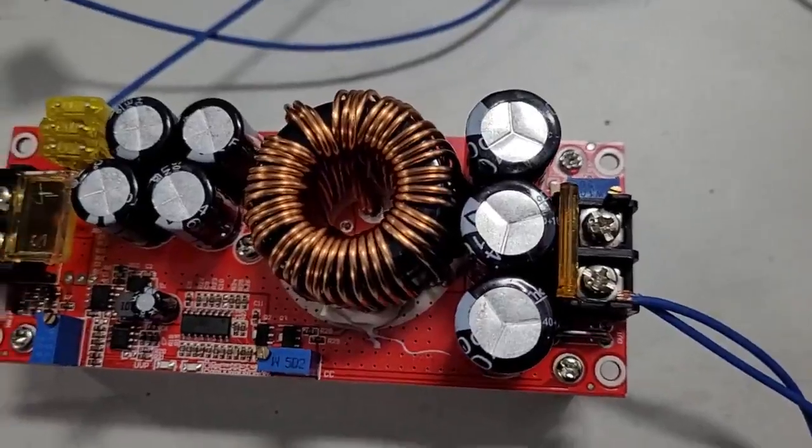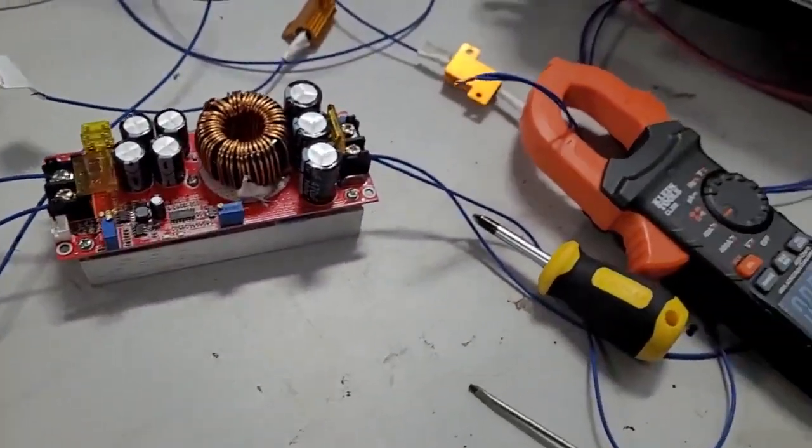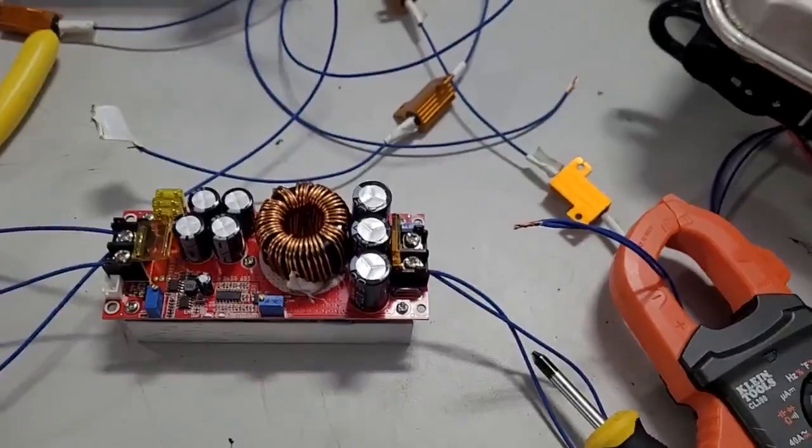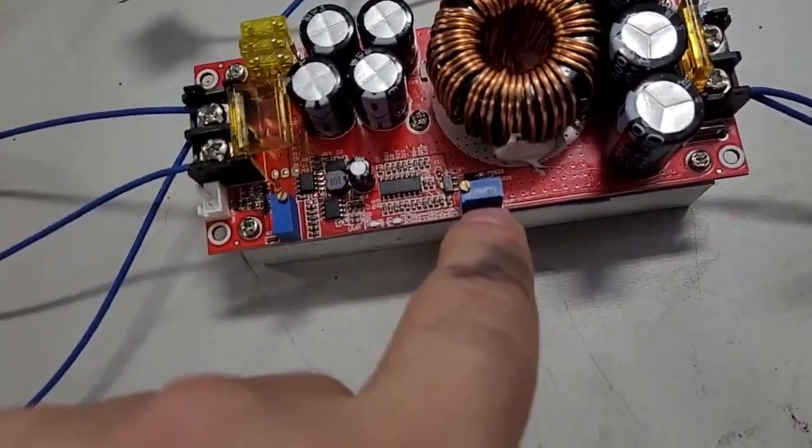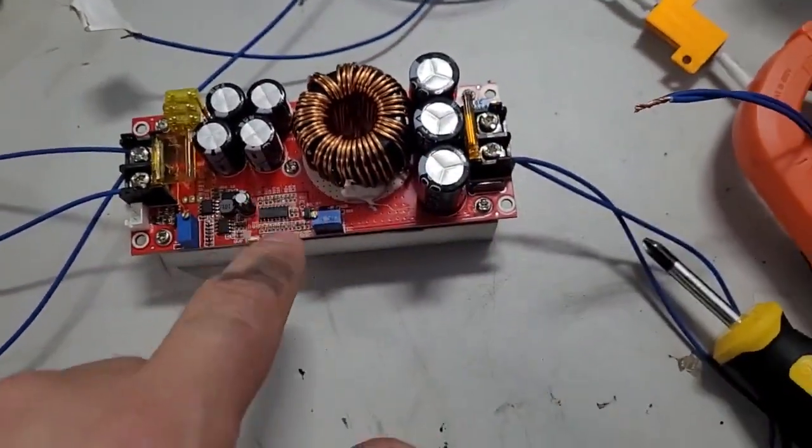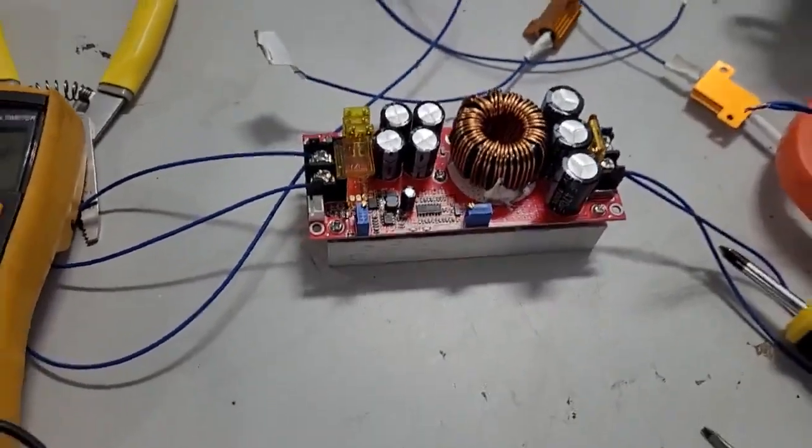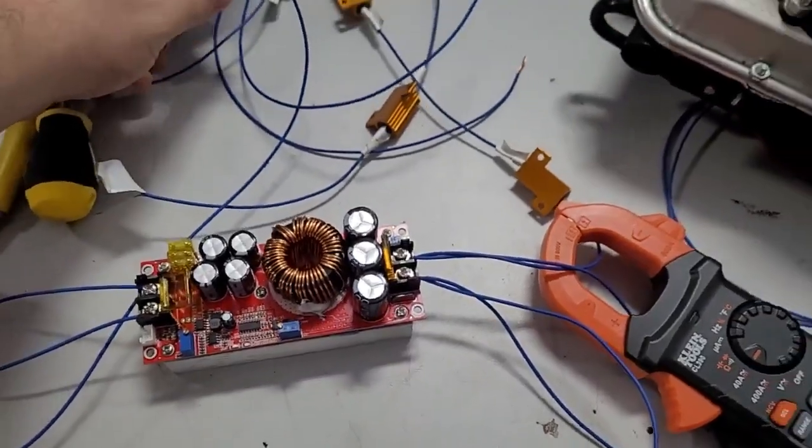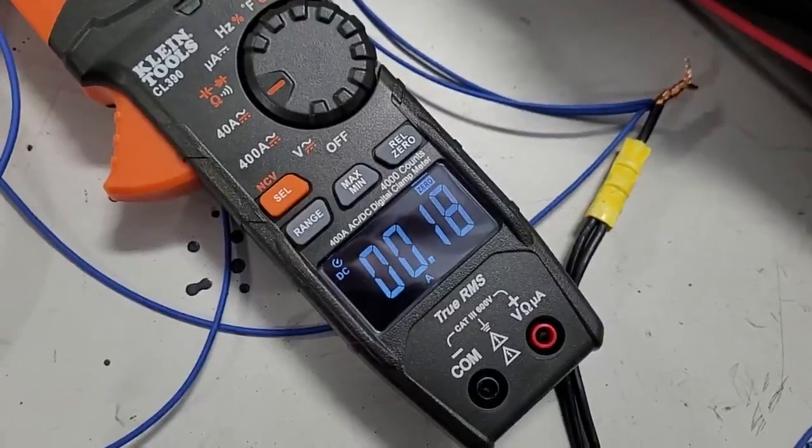So we're going to hook this back up, turn it back on, and since this is our constant current adjustment, we got our voltage right, we'll adjust that one and see if our current goes up. All right, turn it back on, see what our current shows when we start it.